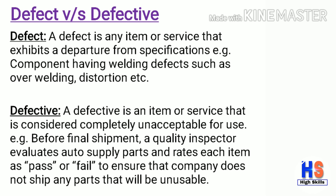In the concept of SPC we need to know the difference between defect and defective. A defect is any item or service that exhibits a departure from specification — for example, a component having welding defects such as over-welding or distortion. A defective is an item or service that is considered completely unacceptable for use — for example, before final shipment a quality inspector evaluates parts and rates each as pass or fail to ensure the company does not ship unusable parts.